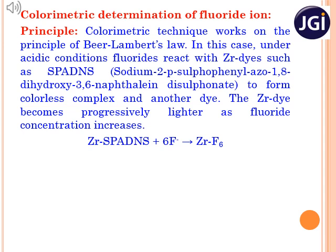When the fluoride concentration increases, the color of the zirconium dye decreases progressively and the color becomes lighter and lighter. By measuring the intensity of this color, it is possible to calculate the fluoride concentration.